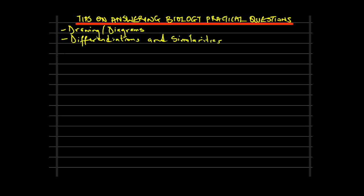It will suffice to say that these are a few of the things that used to fail students in the SSCE exam. We'll be looking at different types of courts — longitudinal courts and transverse courts. We'll also be looking at experimentation: if you have a question that requires you to carry out an experiment, how do you go about it and how do you put down your results?